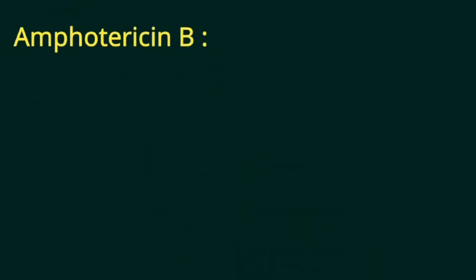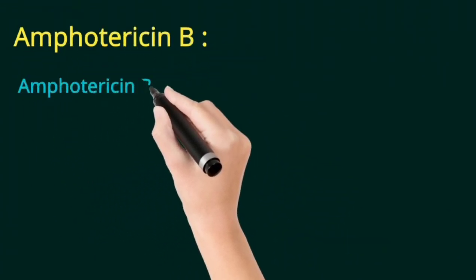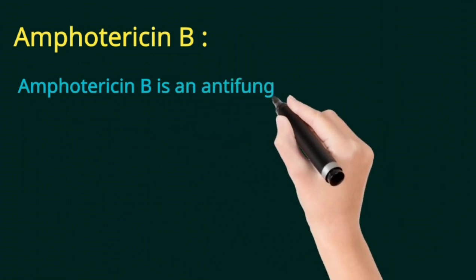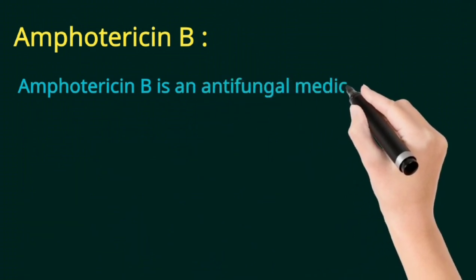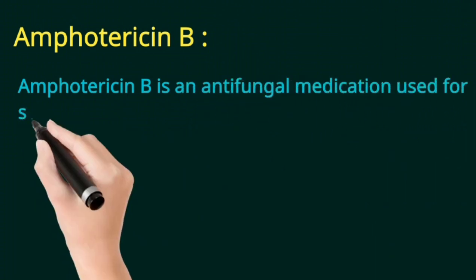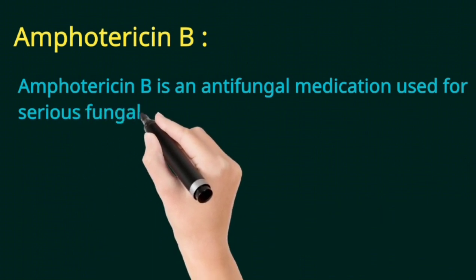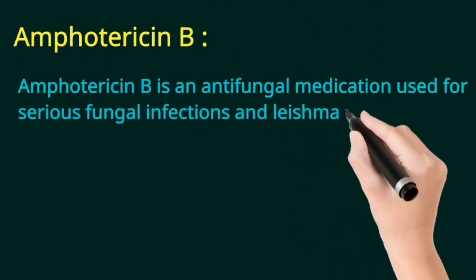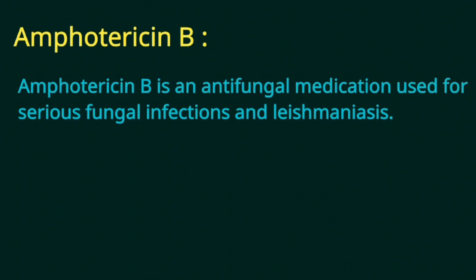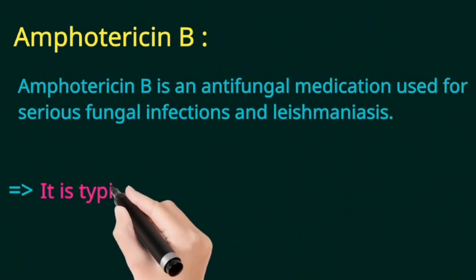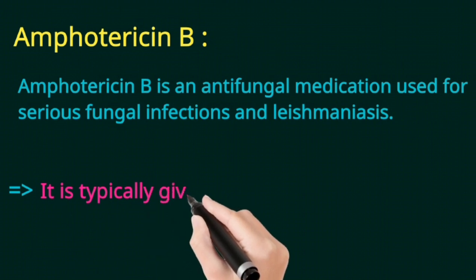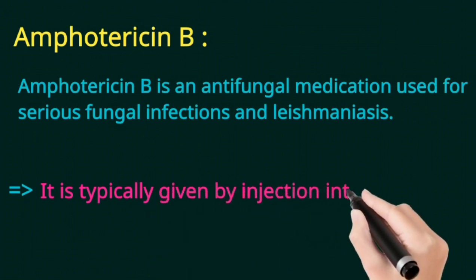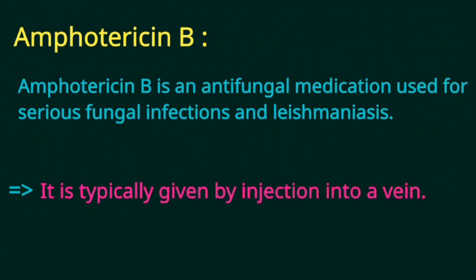Hello friend, today I'm going to talk about Amphotericin B. Amphotericin B is an antifungal medication used for serious fungal infections and leishmaniasis. It is typically given by injection into a vein.